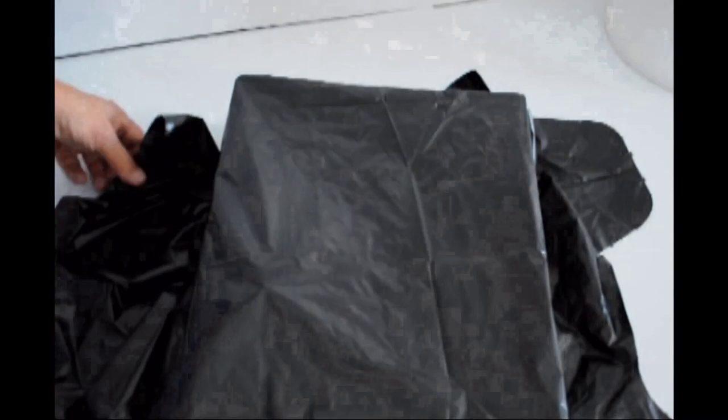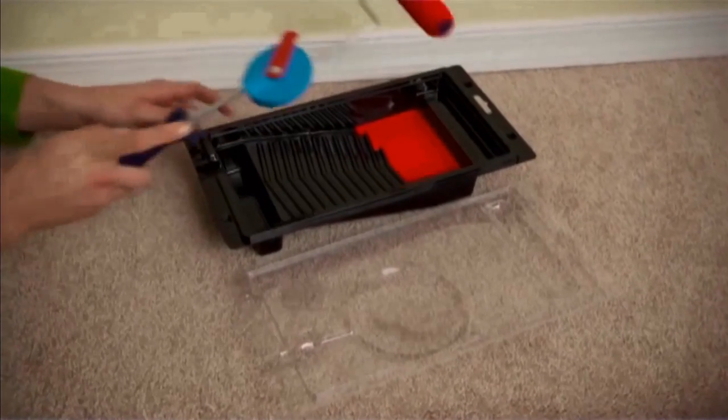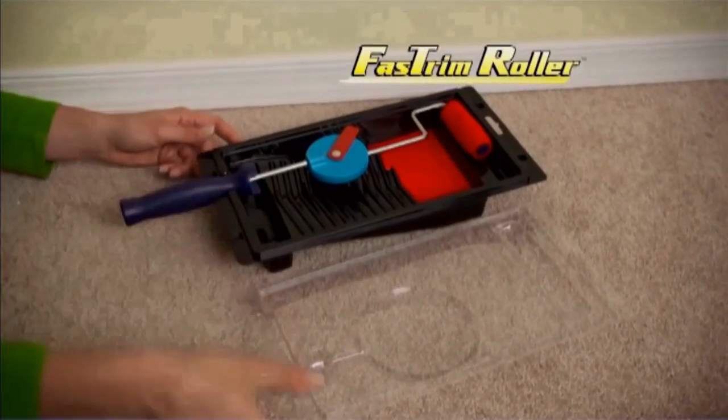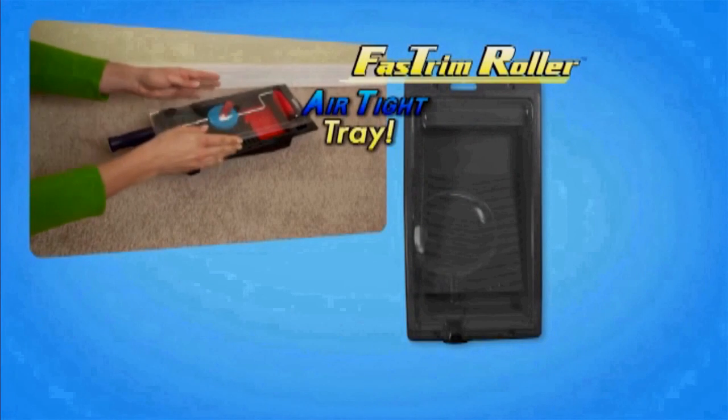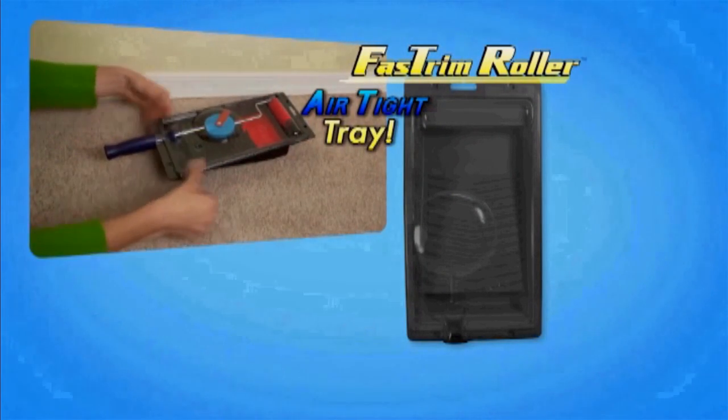The traditional method when needing to take a break is to wrap the tray and roller in plastic or a garbage bag. With our trays, just put the roller on the rest and snap on the lid, saving time and eliminating messy plastic bags.